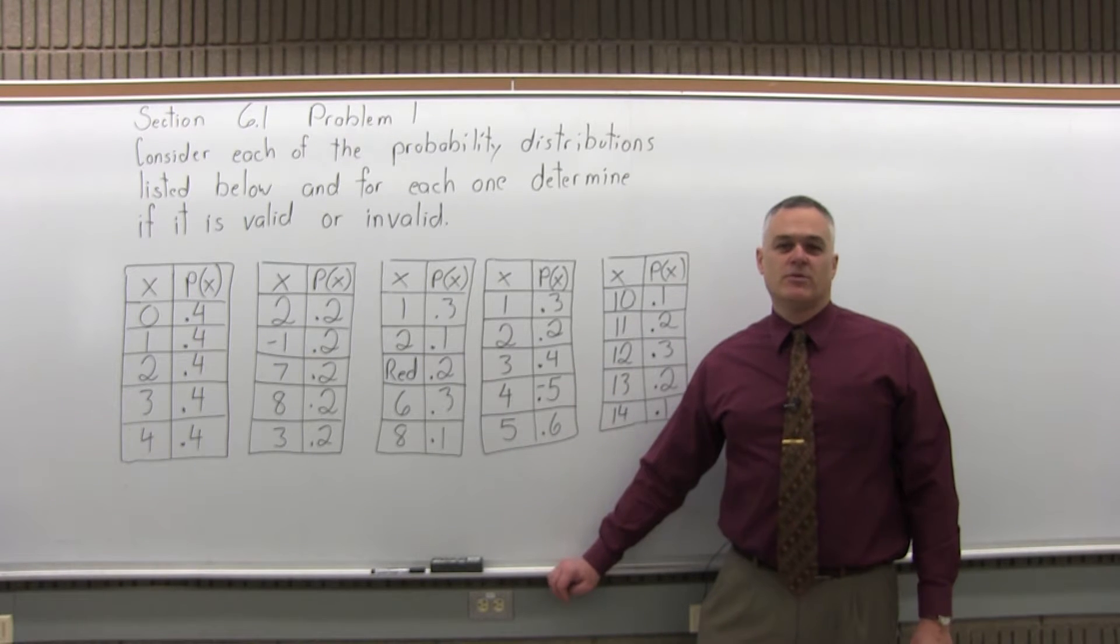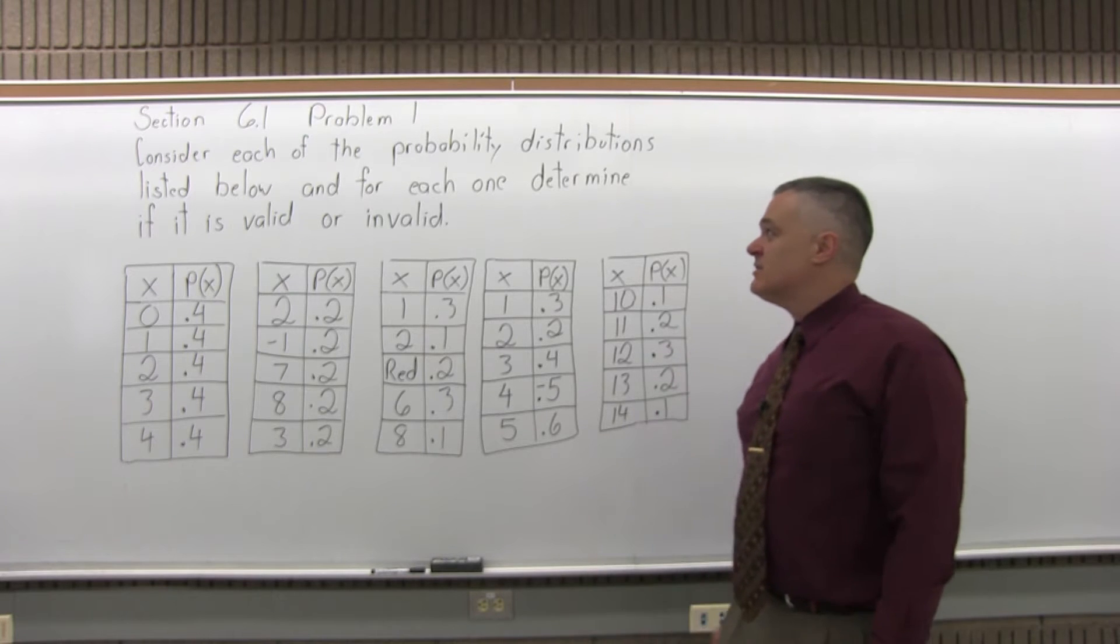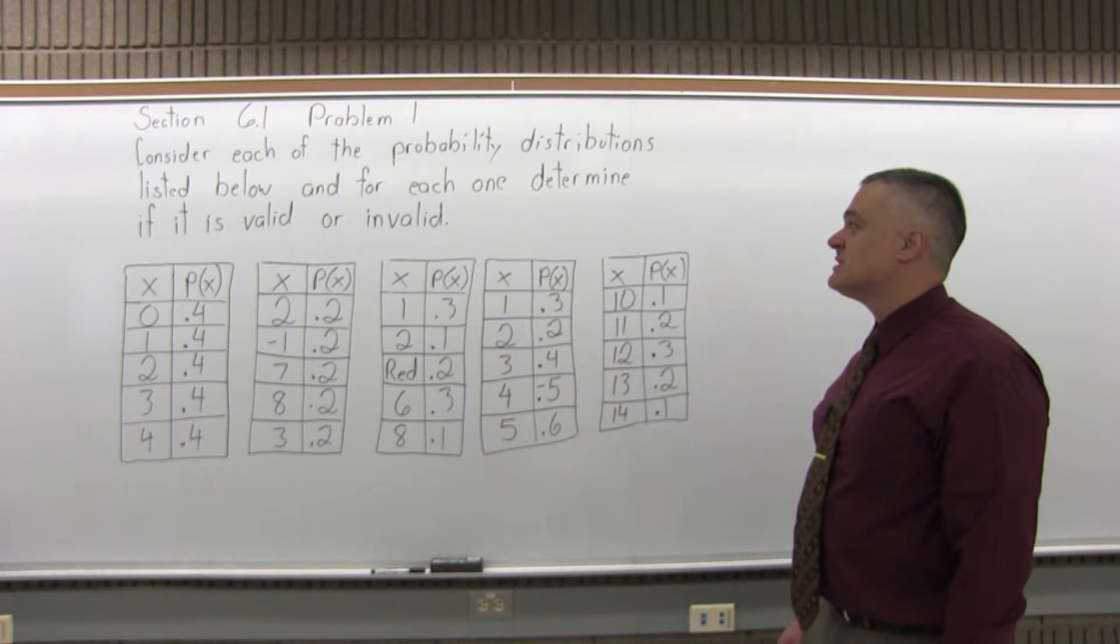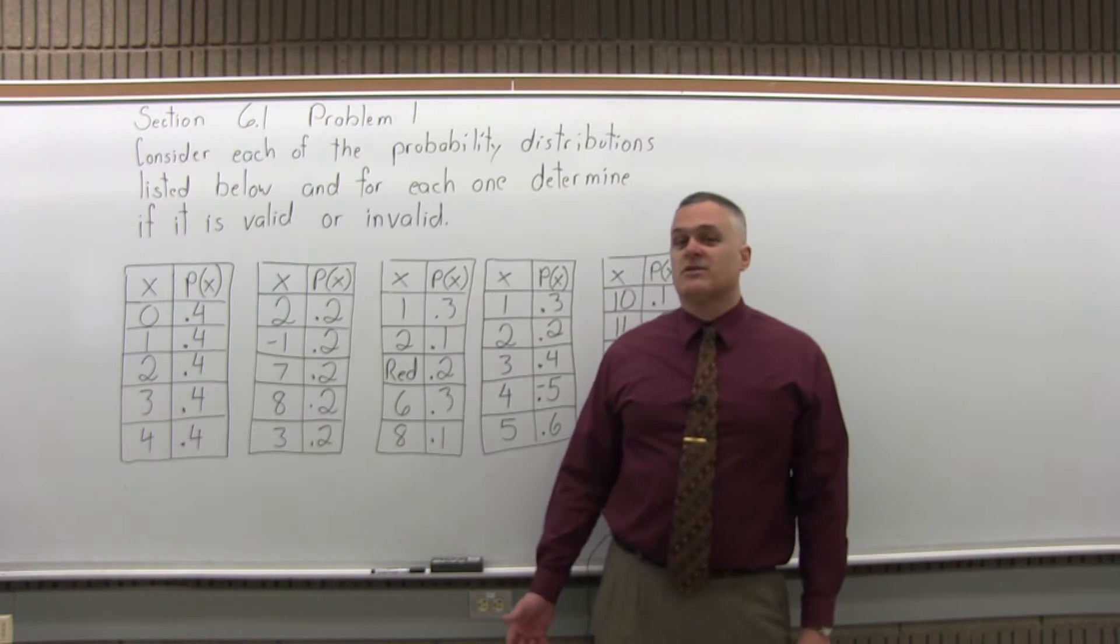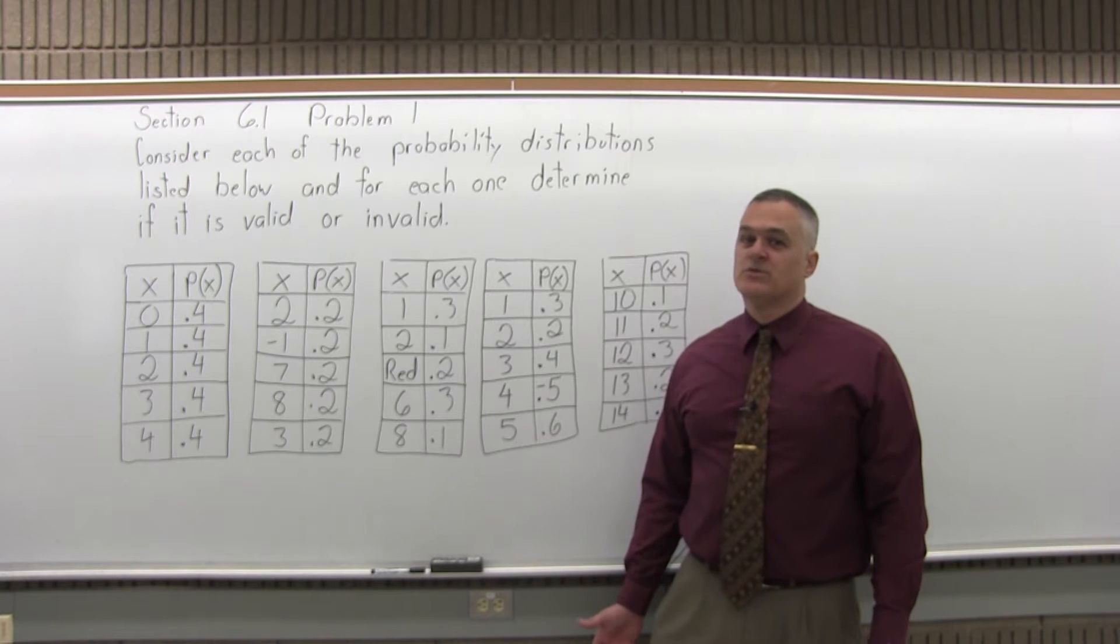This is Section 6.1, Problem 1. It says, consider each of the probability distributions listed below, and for each one, determine if it is valid or invalid. So for each one, you have to consider the three rules you have for probability distribution.